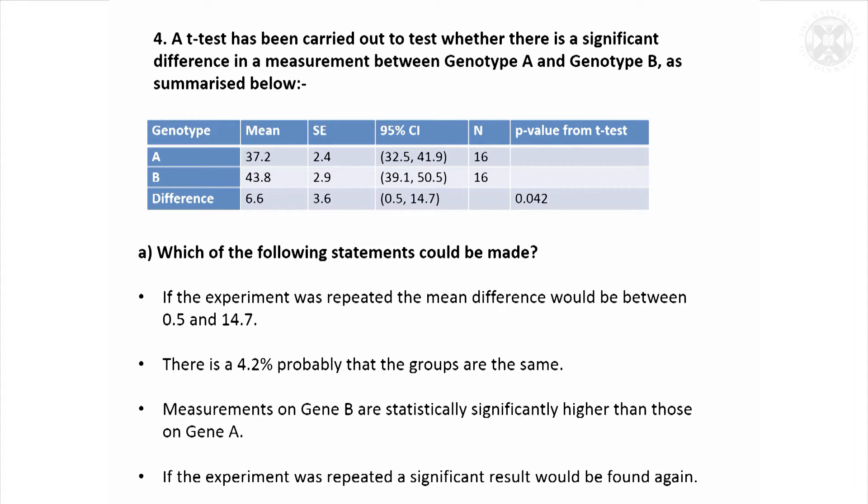The last thing: if the experiment was repeated, a significant result would be found again. Well actually, 19 times out of 20 we would get that gene B was higher than gene A, but not necessarily a significant result. So we might do, but we might not. We're quite likely to because we've had one once before, but what that p-value is telling us is not the probability of getting a significant result, but just that gene B is going to be a higher value than gene A. It might be that gene B was 38 and gene A was 37, and so that's true from our p-value, but it probably wouldn't be significant.